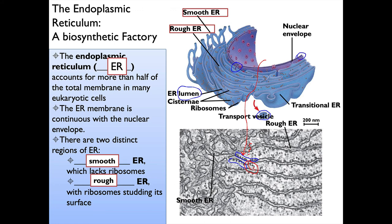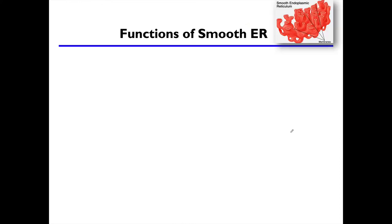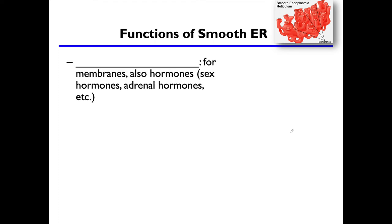Contrast that with the smooth ER portion — there are not a lot of dots representing ribosomes there. There are a few, but these appear to be free ribosomes, not bound to membranes the way they are on the rough ER.